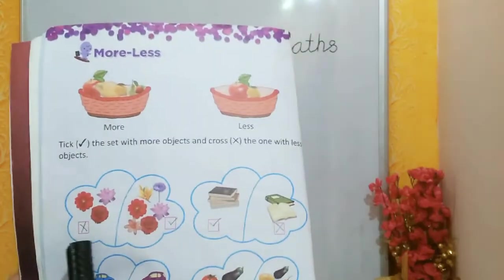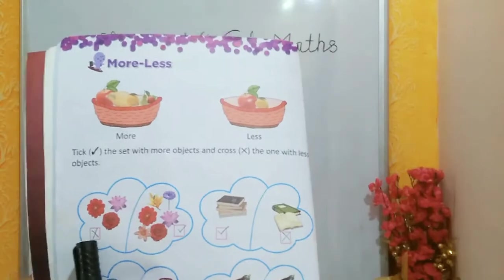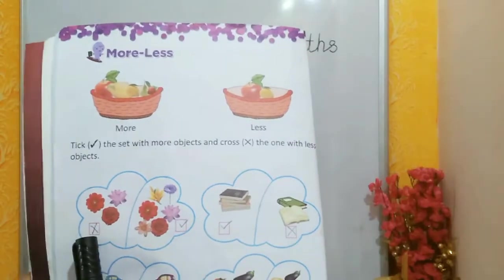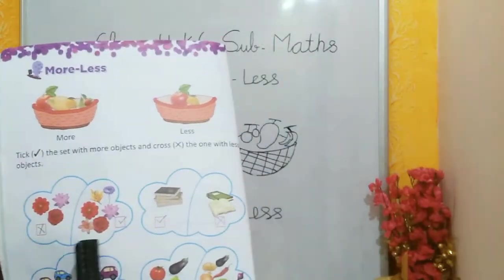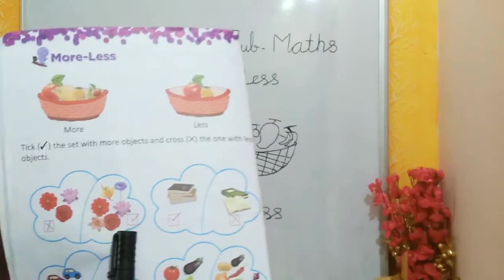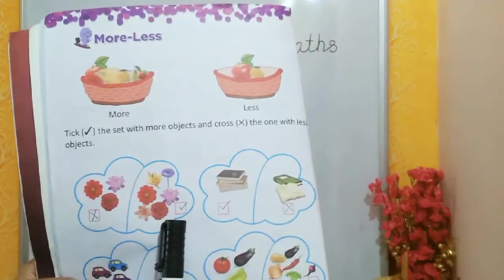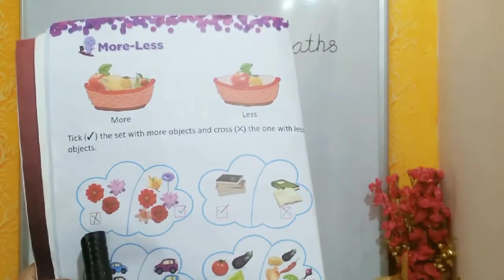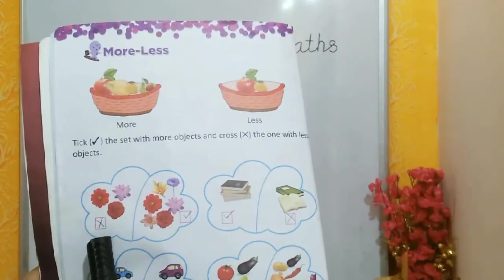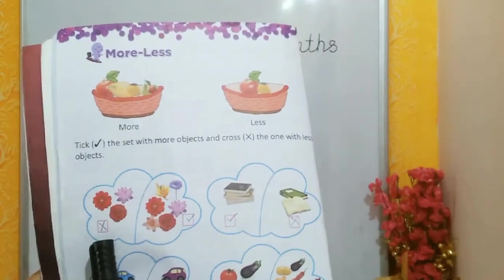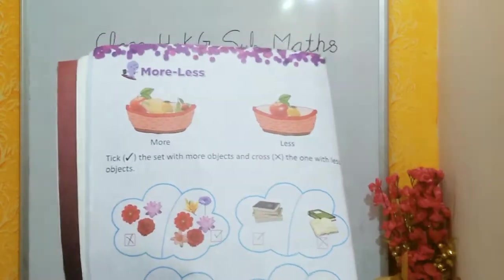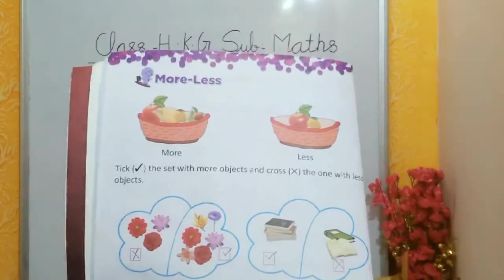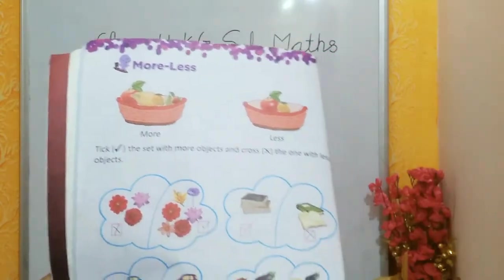Column में, हमें जो things जादा हैं, उस Column के अंदर हमें Right का साइन लगाना है, और जिस Column में Objects Less हैं, उसमें हमें Cross का साइन लगाना है।